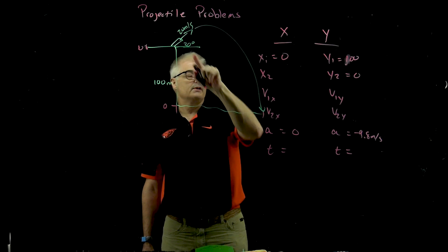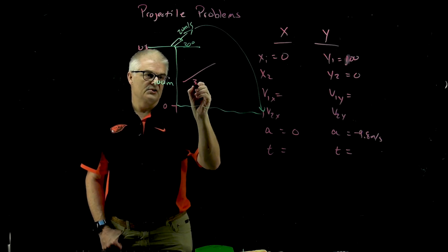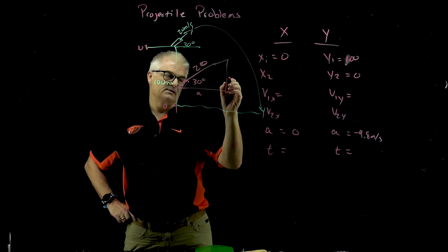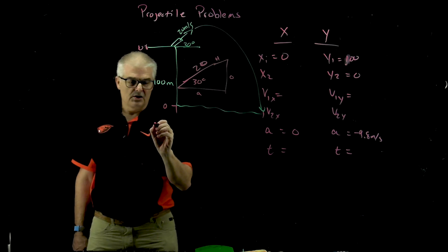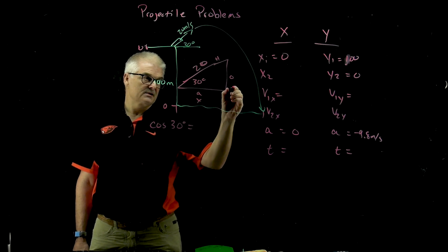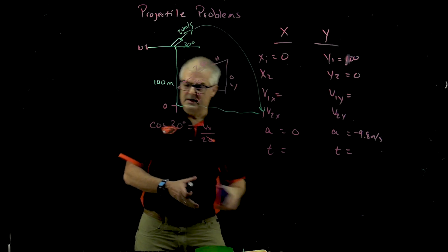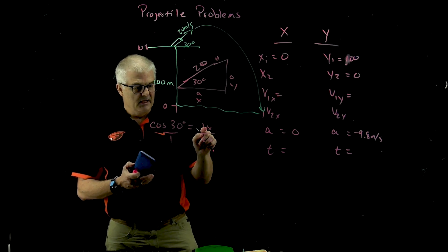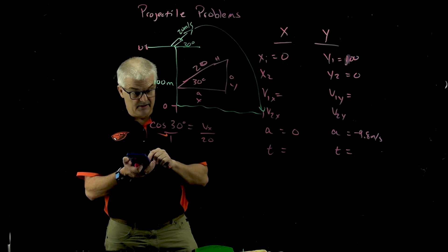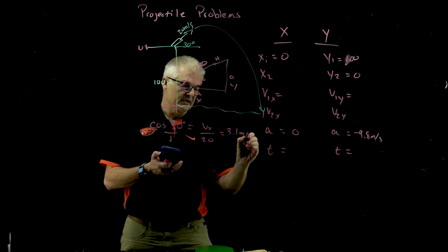Since we know this is 20 meters per second at 30 degrees, we can solve for these two using SOHCAHTOA. I've got a triangle—this is 30 degrees—the hypotenuse is 20. This is the adjacent and this is the opposite. Cosine of 30 degrees, adjacent over hypotenuse, equals vx over 20. So vx is cos 30 times 20. I'll type 20 times cosine of 30 and I get 3.1 meters per second.